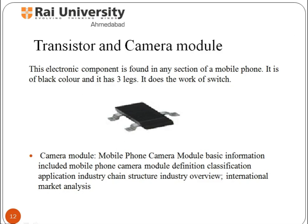Transistor and Camera Module: A transistor is a semiconductor device used to amplify and switch electronic signals and power. It is composed of semiconductor material with at least three terminals for connection to an external circuit. When voltage is applied to one pair of transistor terminals, it changes the current through another pair of terminals, thus it can amplify a signal. A camera module is able to capture photographs and high definition videos. A camera phone is a mobile phone that can take pictures and record video clips.